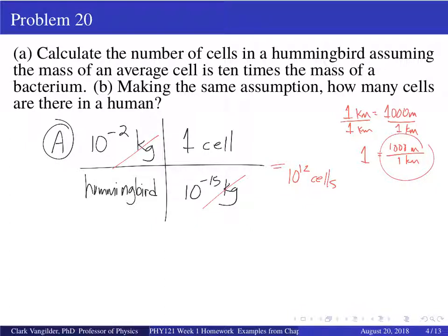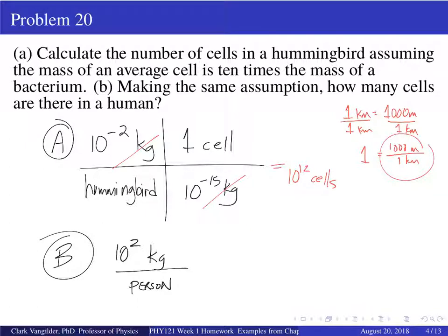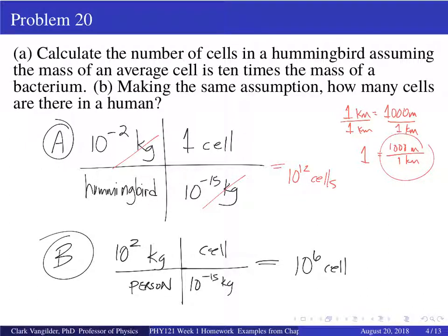Human beings have trillions of cells because we're bigger than hummingbirds. For a human at 100 kilograms — that's about a 220-pound person — divided by 10 to the minus 15 kilograms per cell, we get 10 to the 17 cells. So we have 10,000 times as many cells as a hummingbird, which makes sense since I could hide a hummingbird in my hand.